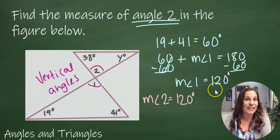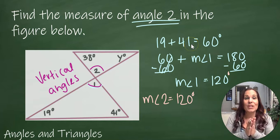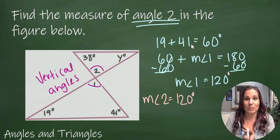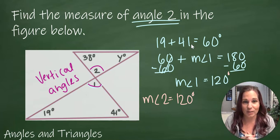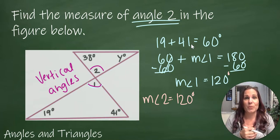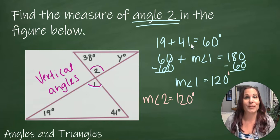And then we're done with that one. So we used two properties here. We used the fact that all three angles add up to 180 in a triangle, and we also used the property that vertical angles are congruent.